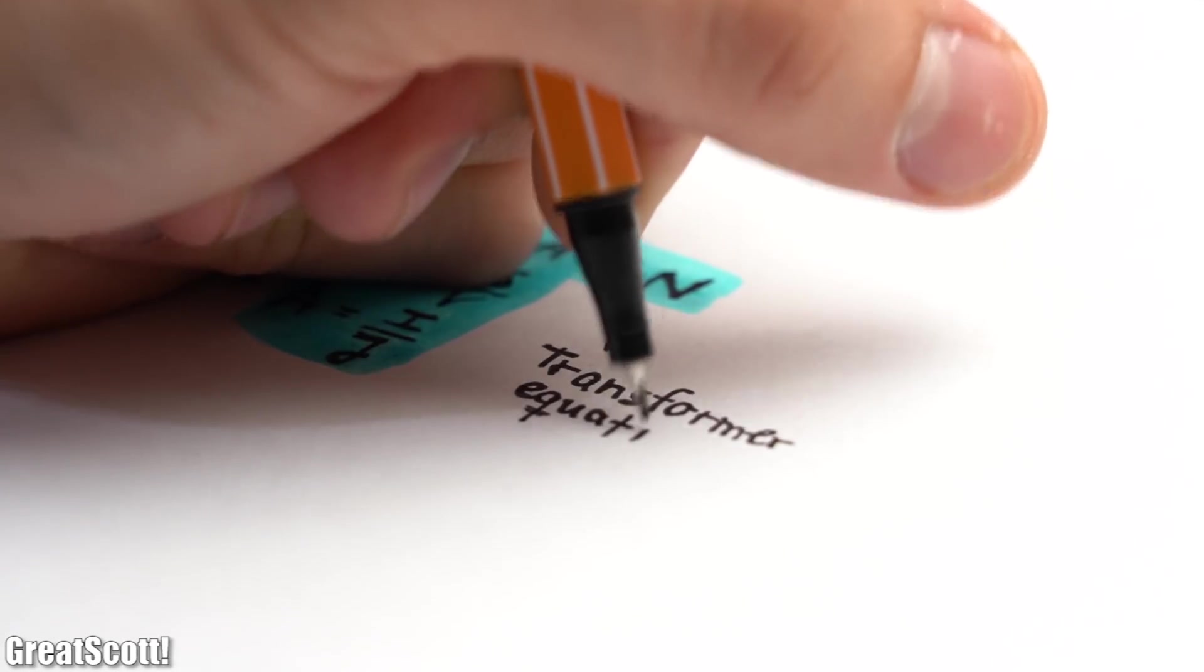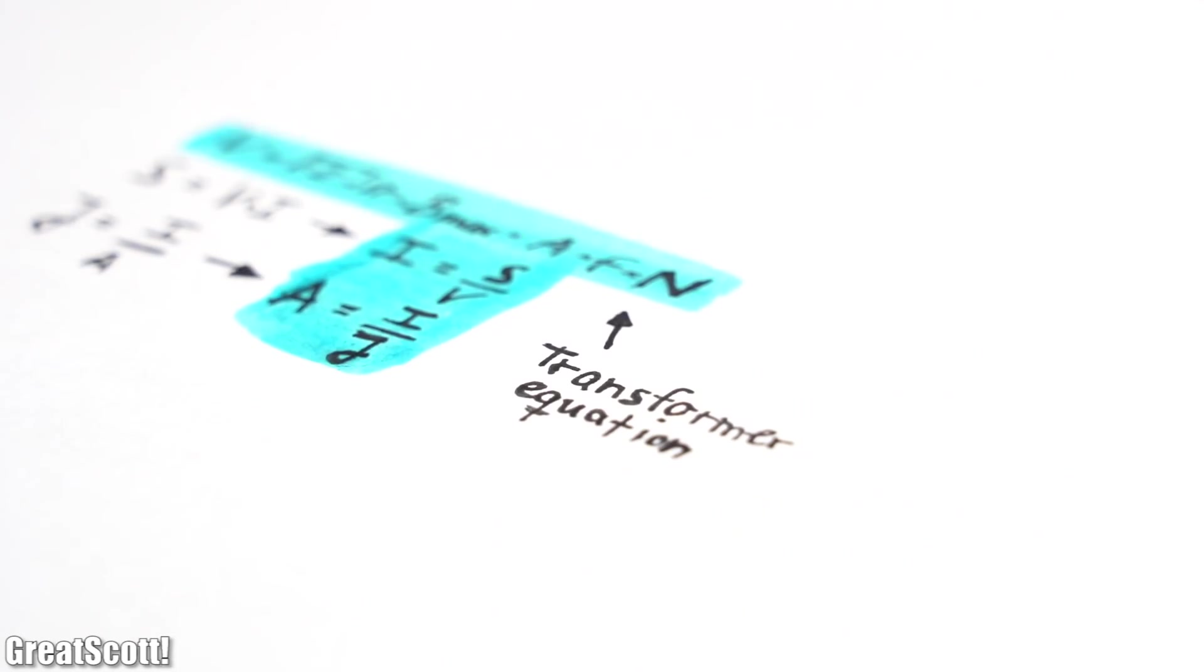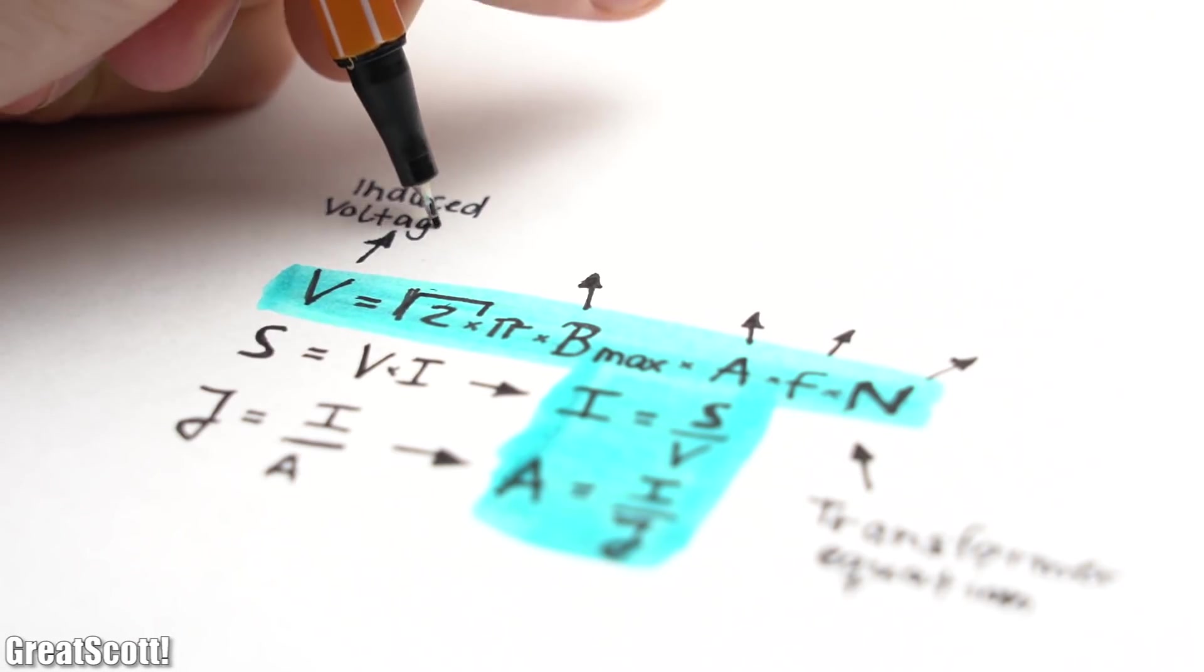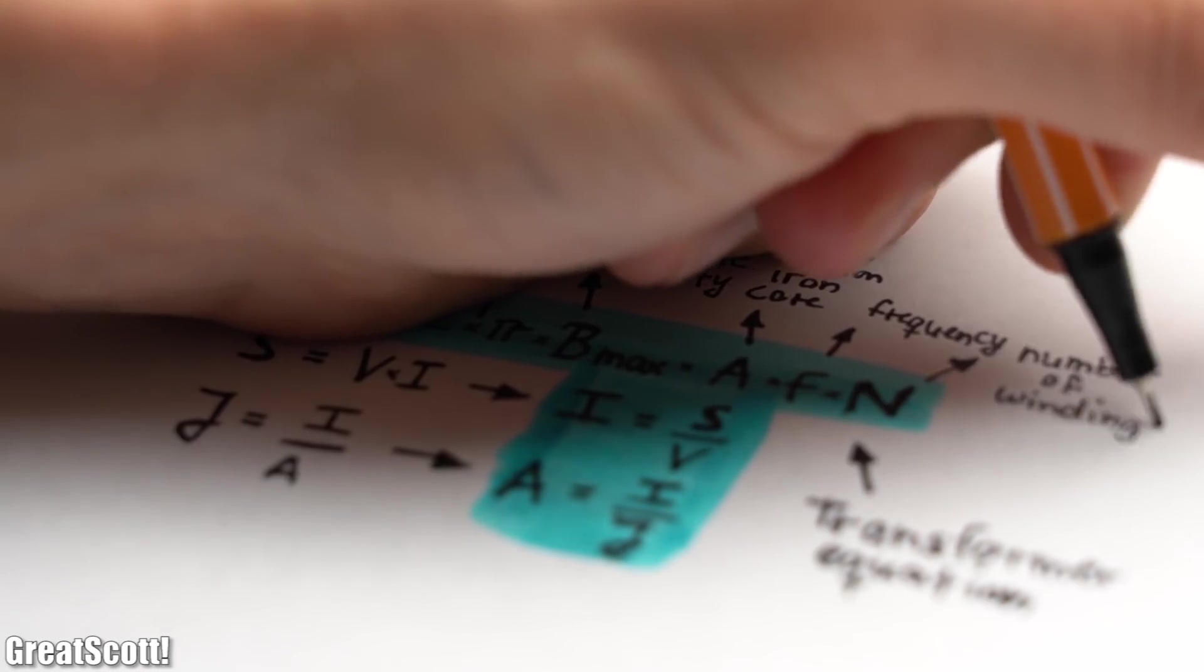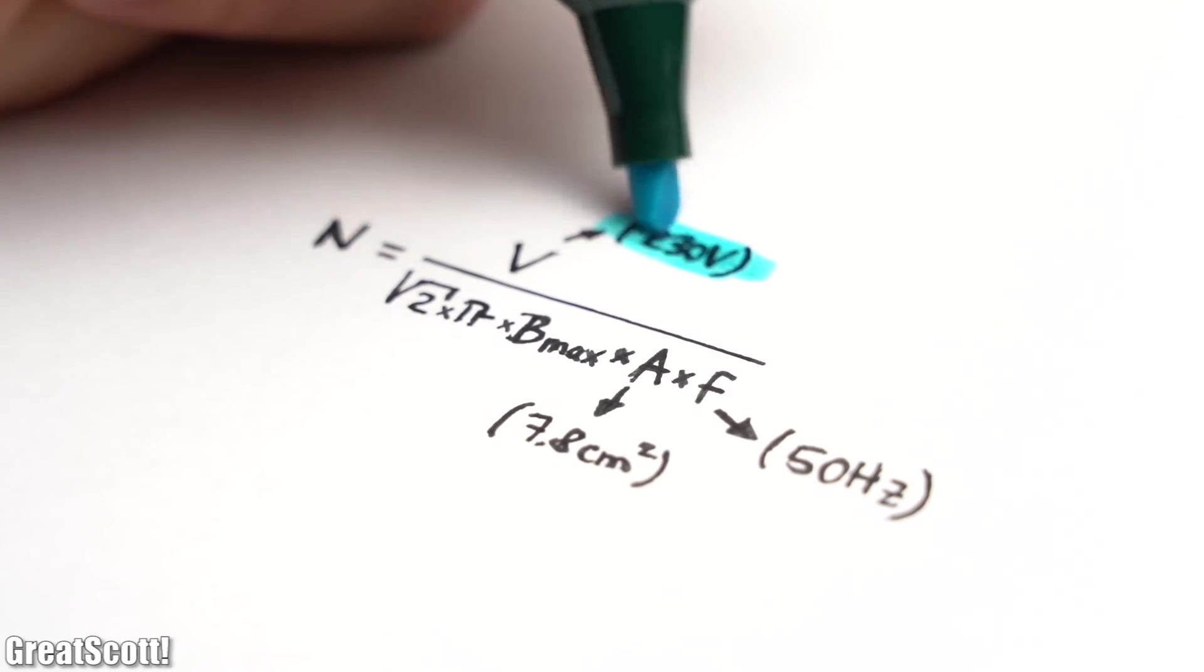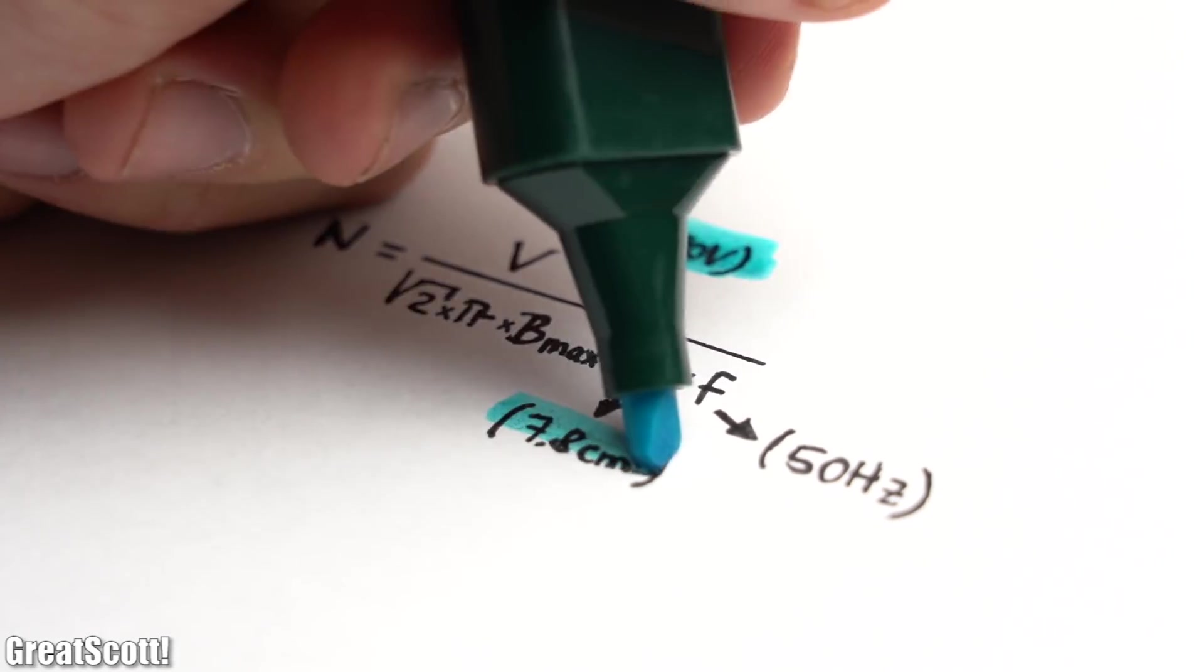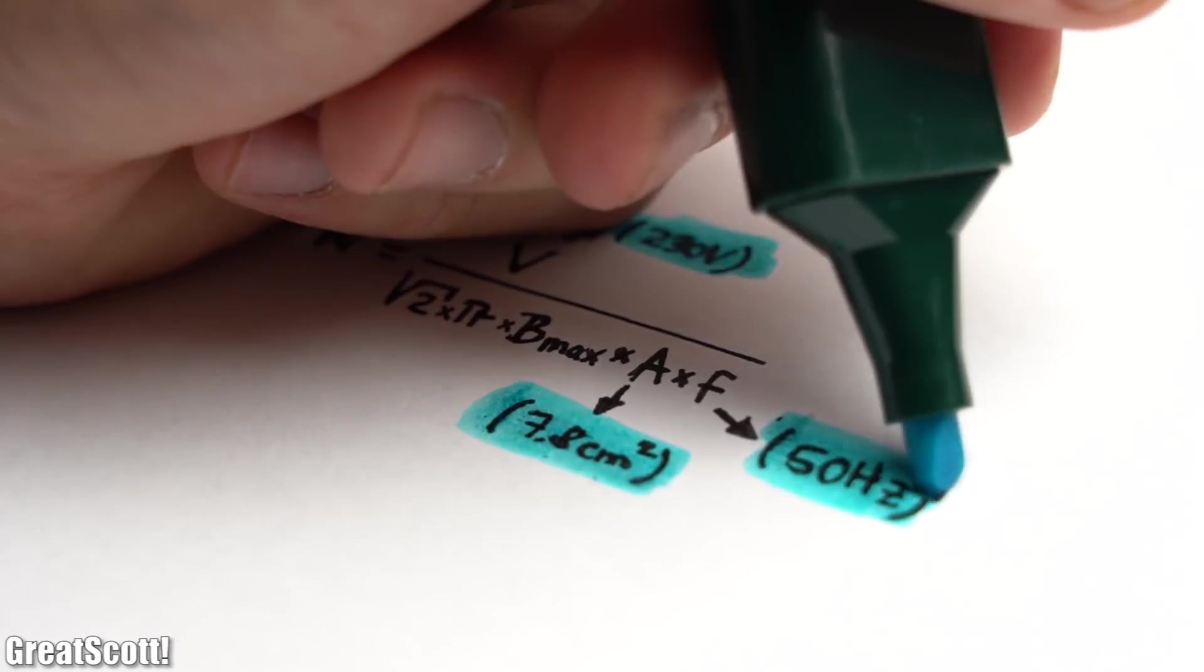The first one is the most important one and the so-called transformer equation, which states that the induced voltage equals the maximum magnetic flux density multiplied by the cross section of the iron core multiplied by the frequency multiplied by the number of turns. With it we can calculate the number of turns on the primary side by simply replacing the variables with the given values of my transformer core.